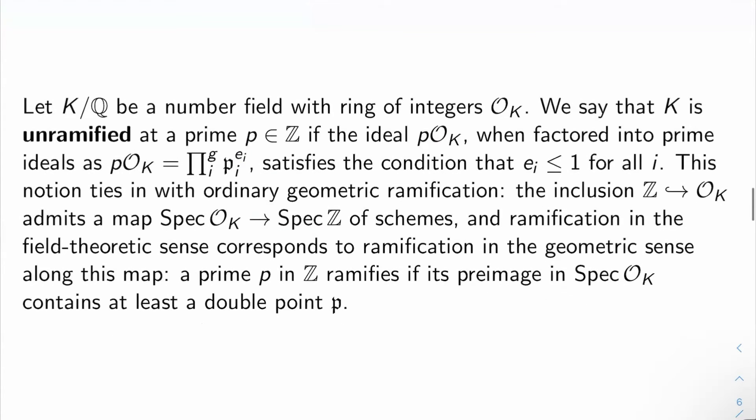For the algebraic geometry people, this ties in with the ordinary notion of geometric ramification because the inclusion Z into O_K admits a map Spec(O_K) to Spec(Z) of affine schemes. And then ramification in the field theoretic sense as I've just defined it corresponds to ramification geometrically along this map in the sense that a prime p in Z ramifies field theoretically if and only if its pre-image in Spec(O_K) contains at least a double point.